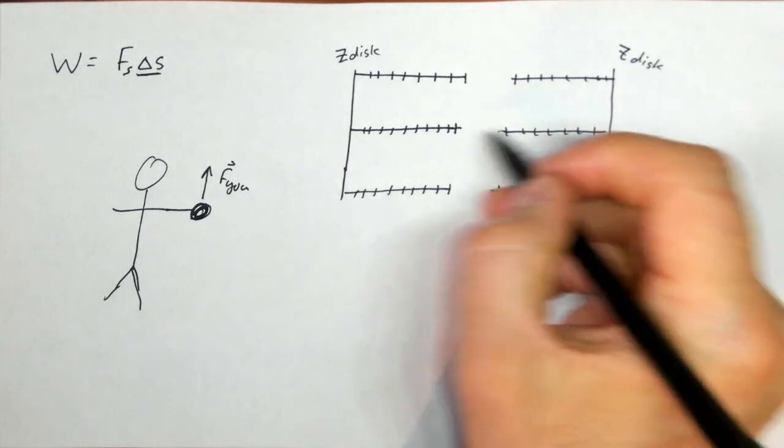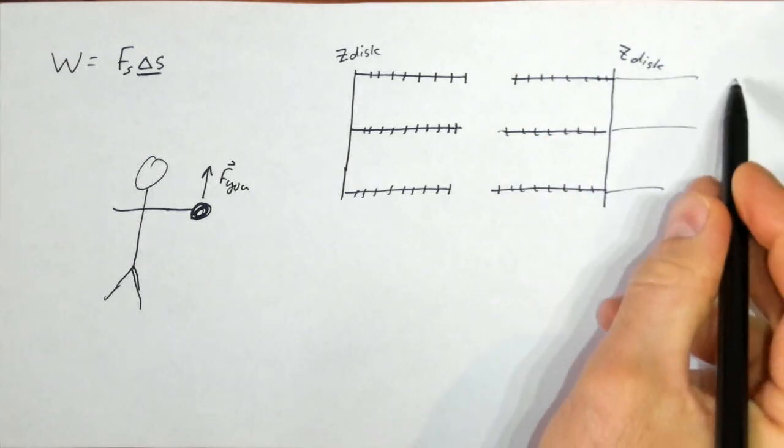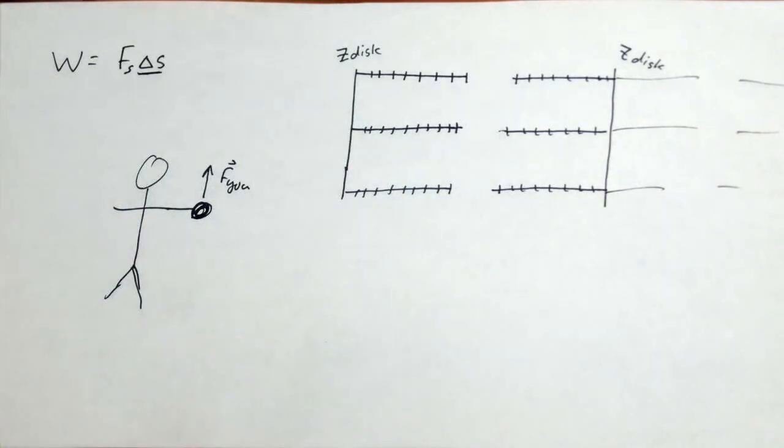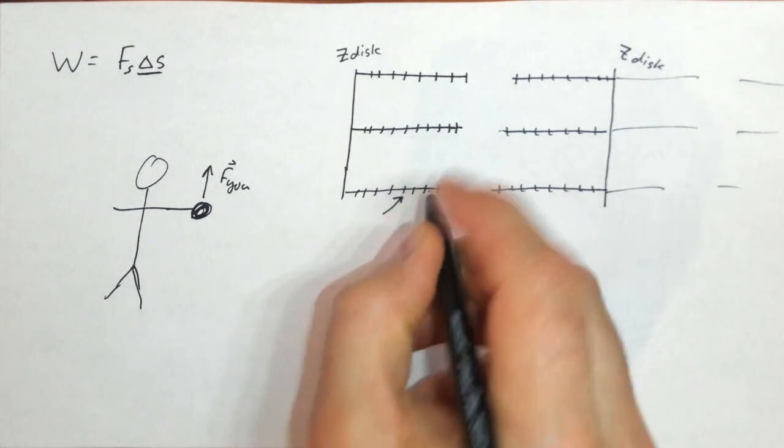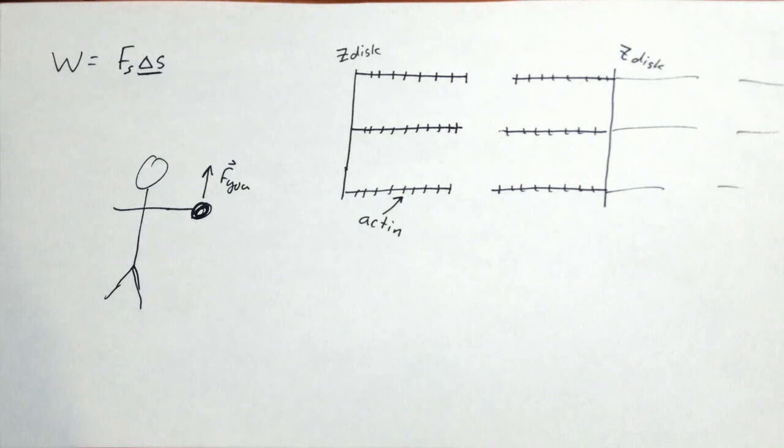And these are called a Z-disc on either side here. And on the other side, this would repeat. So on the other side, there's some more of these sticking off and then another unit there, so on and so forth. And they repeat throughout a muscle fiber. And these molecules are long molecules called actin. And they're actin filaments.